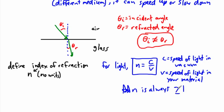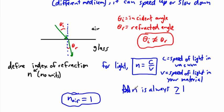For example, the index of refraction for air is approximately equal to one — we're going to use that. So if you ever calculate that n is less than one, stop — you've made a mistake, or you've invented something where light goes faster in that material than in a vacuum, which as far as we know can't happen.